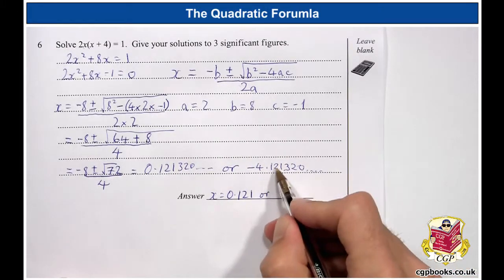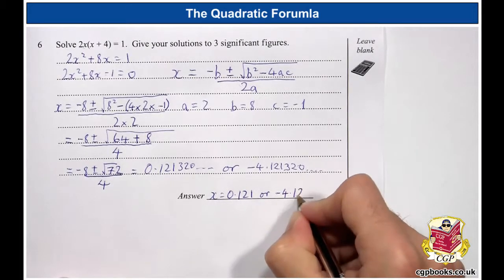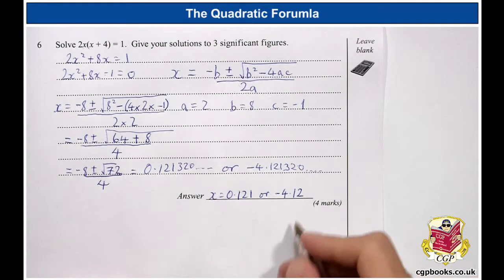Or, 1, 2, 3. So, minus 4.12. And there are two solutions. Four marks for that.